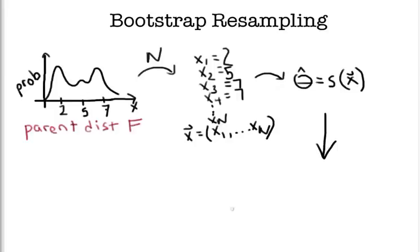So we compute a bootstrap sample, which I'll denote as x star, which we compute via sampling from the original vector x, but we do that with replacement. So we choose, say, randomly, first we get, say, x4,